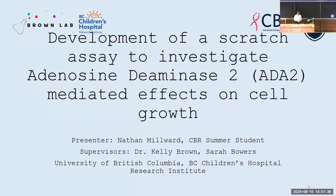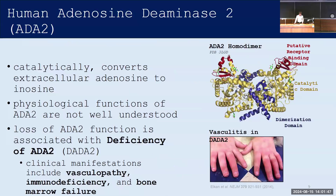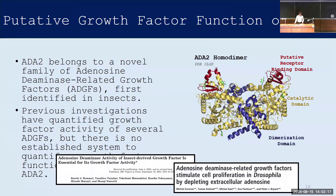My name is Nathan Millward. This summer I've been working in the lab of Dr. Brown at BC Children's Hospital to develop a scratch assay to investigate adenosine deaminase 2-mediated effects on cell growth. Deficiency of adenosine deaminase 2 is a rare disease caused by biallelic loss of catalytic function variants in the ADA2 gene, resulting in a range of clinical manifestations including vasculopathy, immunodeficiencies, and bone marrow failure. ADA2 itself is a homodimeric secreted enzyme that catalyzes the conversion of adenosine to inosine, though its roles in human physiology are not well understood.